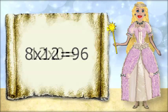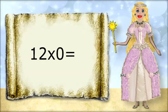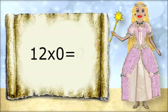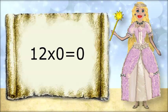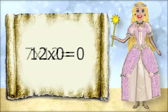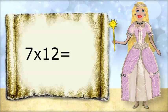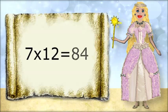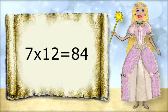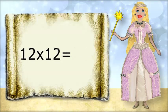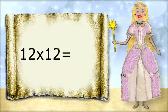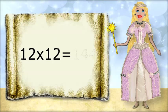12 times 0 equals 0. 7 times 12 equals 84. 12 times 12 equals 144.